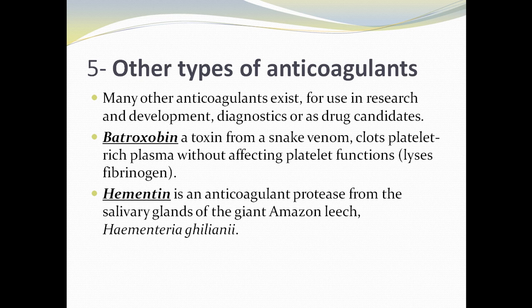Other types of anticoagulants exist for use in research and development, diagnosis, or as drug candidates. For example, batroxobin is a toxin from snake venom that clots platelet-rich plasma without affecting platelet function, and lyses fibrinogen. Hementin is an anticoagulant protease from the salivary gland of the giant Amazon leech.